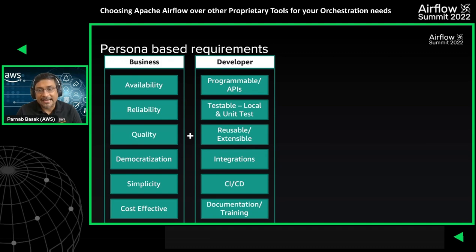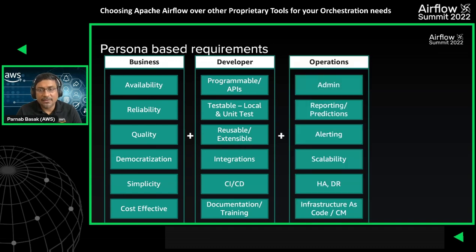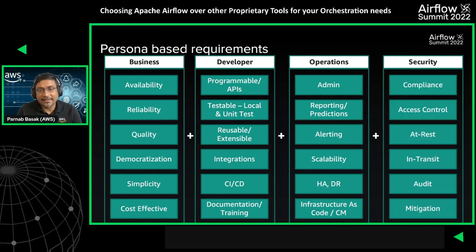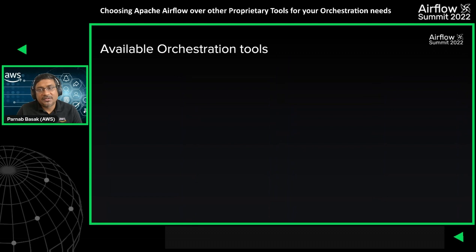When it comes to the developer using the tool to build a workflow, it should be testable, programmable, and extensible. It should support CI/CD processes and provide integration support to different data sources besides being well documented. The operations team wants the tool to support easy administration, infrastructure as code, reporting, alerting, and it should be scalable with HA/DR right out of the box. The security persona is looking at compliance, role-based access control, security of data at rest and in motion, and audit capabilities.